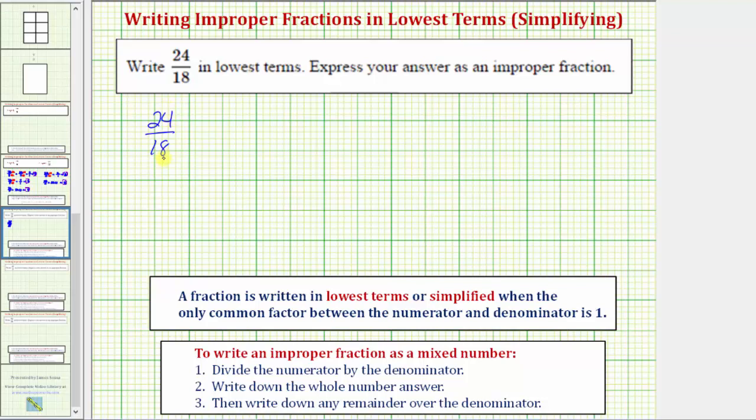If we can look at 24 and 18 and recognize that the greatest common factor is six, we can quickly write this fraction in lowest terms by dividing the numerator and denominator by six.